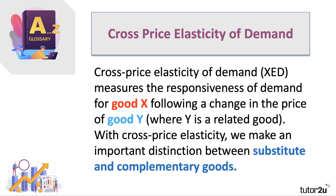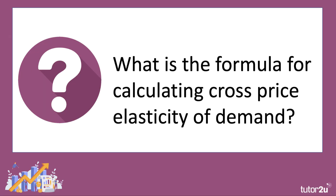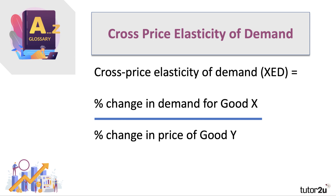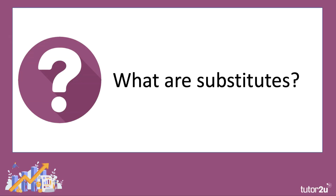Crucially with cross price elasticity, we make an important distinction between substitute and complementary goods. There is of course a formula — always worth putting in the exam to get a mark. Cross price elasticity equals the percentage change in demand for good X divided by the percentage change in the price of good Y. If there is no relationship between X and Y, the cross price elasticity will be zero.